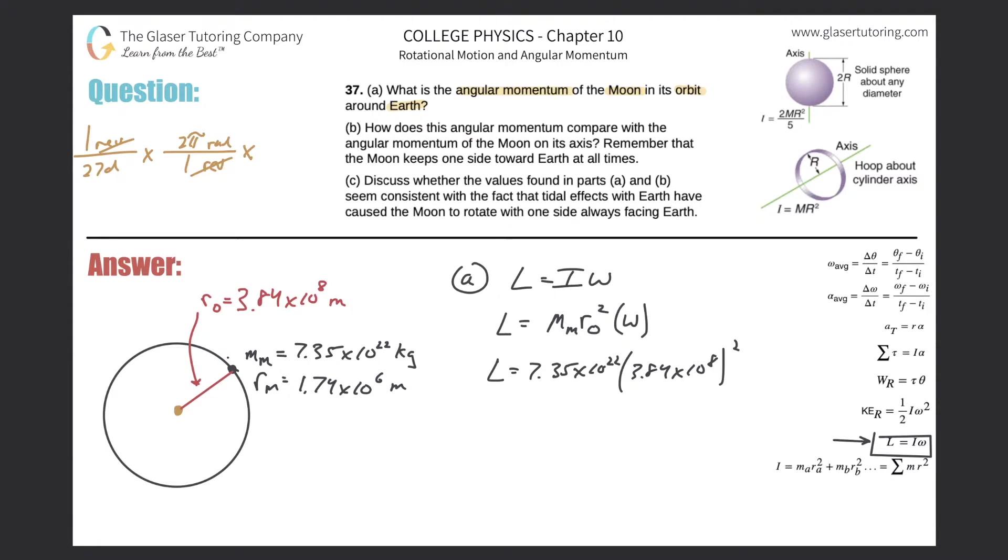And then we have to get rid of days. So we would go, let's say days to hours. In one day, there's 24 hours. And then I can go from hour to seconds. There's going to be 3,600 seconds in one hour. And we will have our value. So this works out to then be basically 2 pi divided by 27 times 24 times 3,600. And that's the value I'm going to be plugging in for my omega.